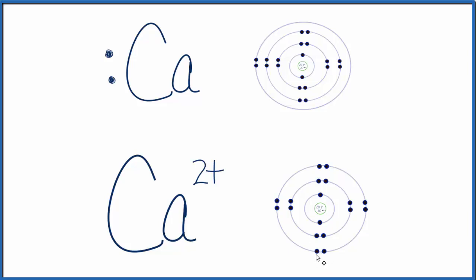There's one more thing we could do in writing the Lewis structure for Ca2+, and that's put brackets around the Ca. You'll sometimes see its Lewis structure written here with the brackets.